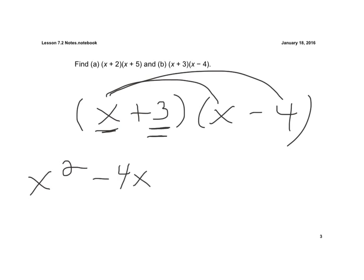Now I have to do the same thing with this 3. So the 3 has to be multiplied by the X, and the 3 has to be multiplied by the negative 4.